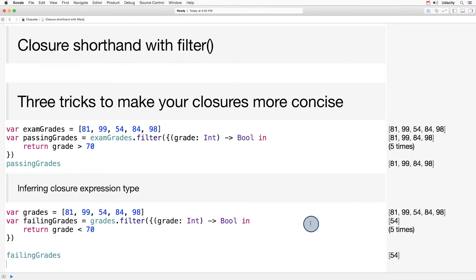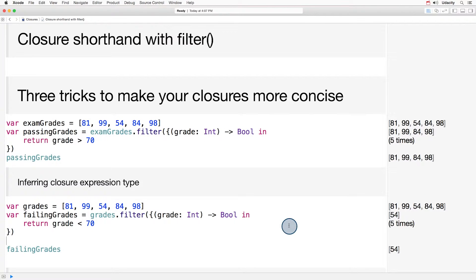Here's the first trick. The compiler can infer closure expression types based on what parameter type a given function expects. In this case, the compiler can infer that the closure expression for filter will take in a parameter that matches the type of the array being filtered. The compiler can also infer that this closure will return a bool.